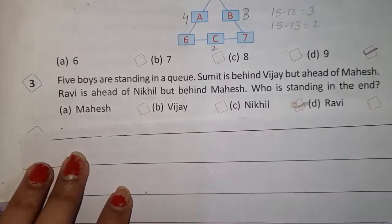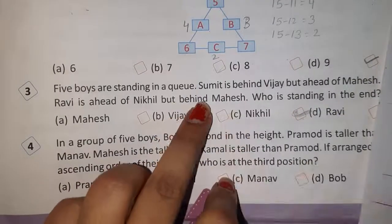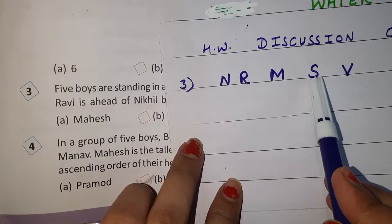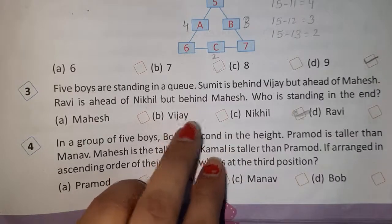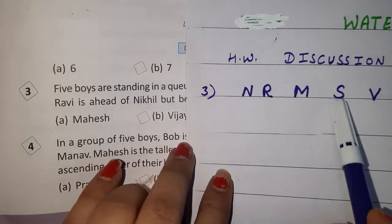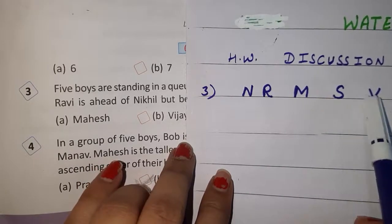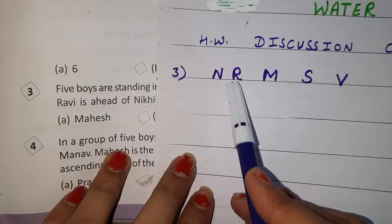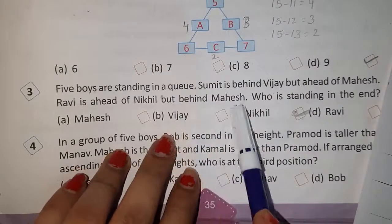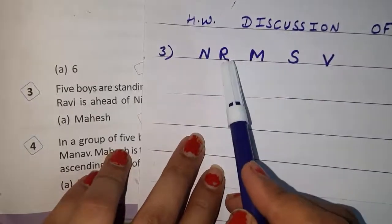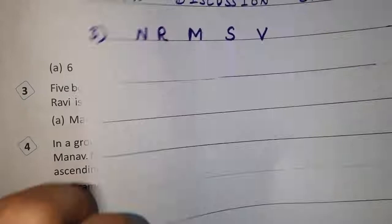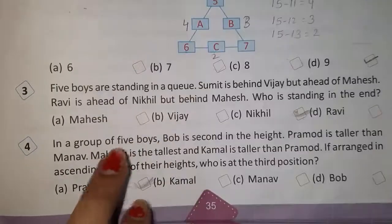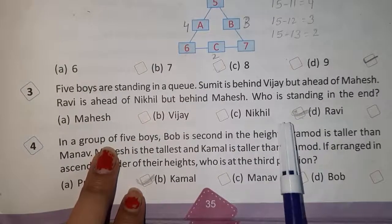Sumit is behind Vijay, but ahead of Mahesh. Ravi is ahead of Nikhil, but behind Mahesh. So the queue order can be determined. Then who is standing at the end? The answer is Nikhil. So your answer will be option C — Nikhil.